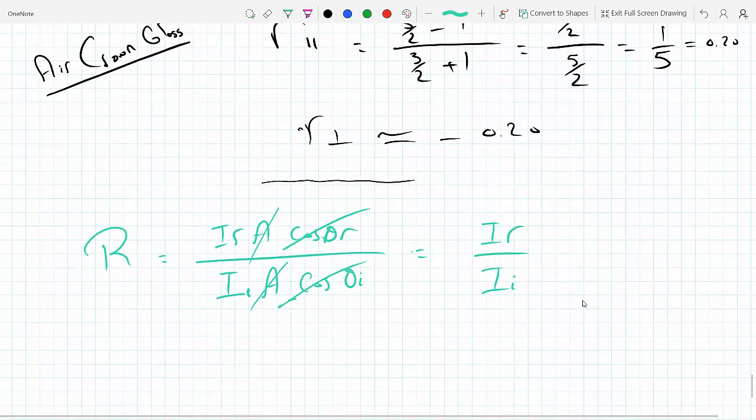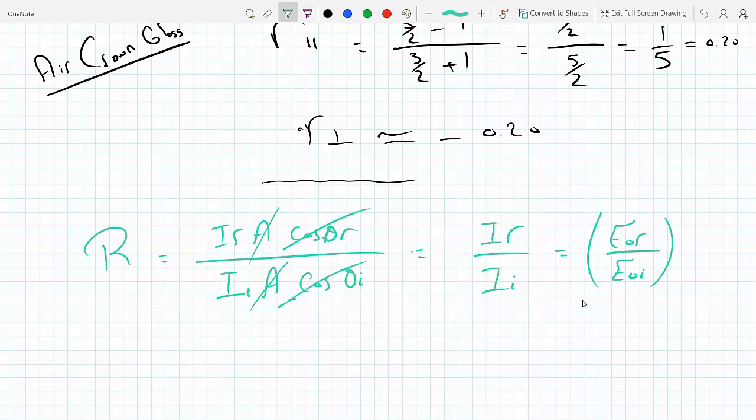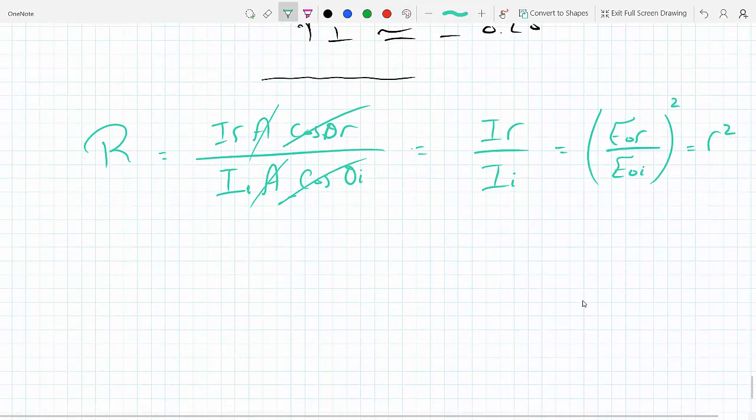Now we know that if they're zero, these things go to one, the area is the same so it cancels out. So we get I_r over I_i, which again is also equal to the ratio of the electric field amplitudes squared. This is the same exact thing as r squared, and we already found what r is.